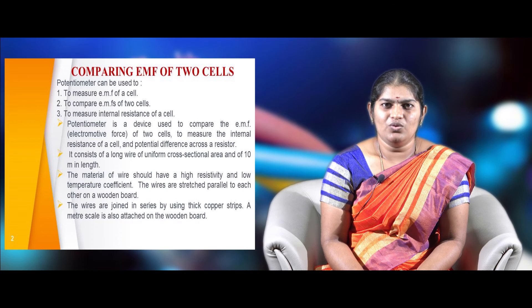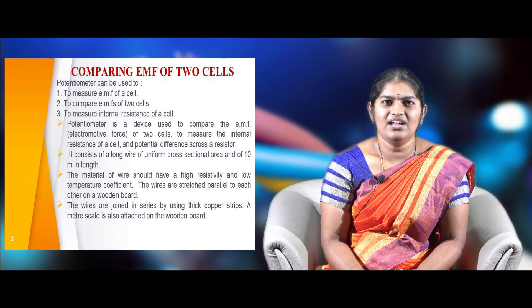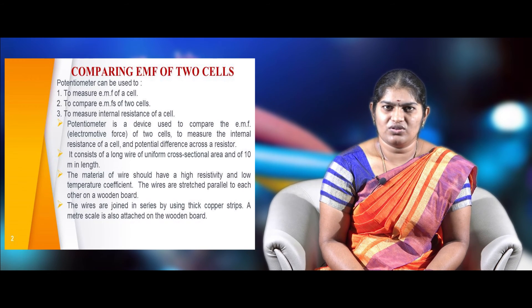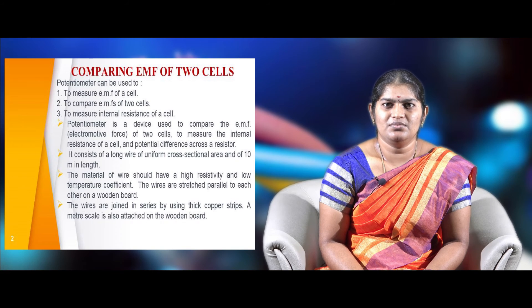It consists of a long wire with uniform cross-section area, 10 meters in length. The material of the wire should possess high specific resistance and low temperature coefficient. The wires are stretched parallel to each other on a wooden box and joined in series by connecting thick copper strips. A meter scale is also attached on the wooden box.